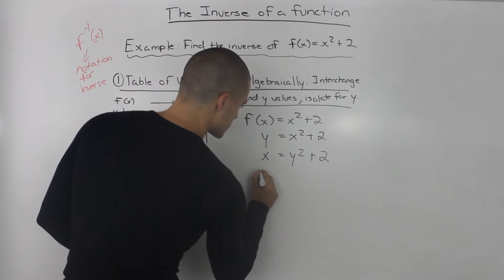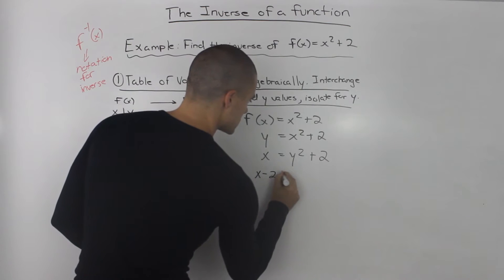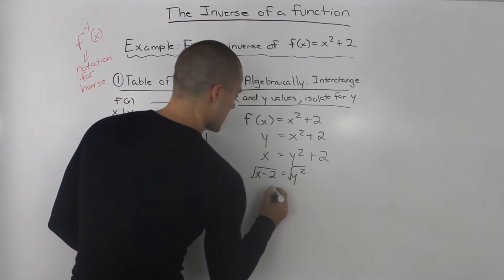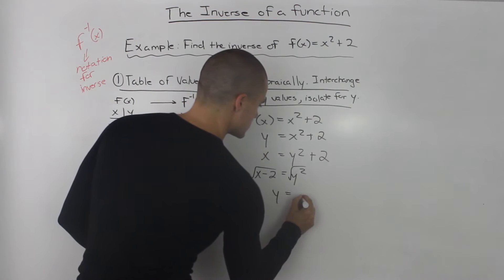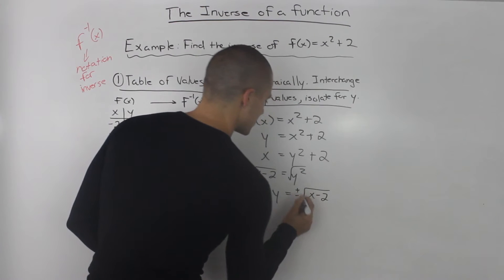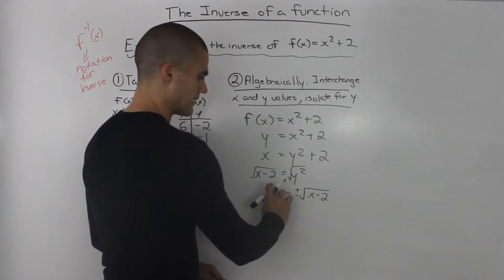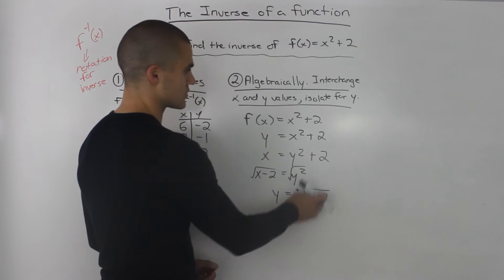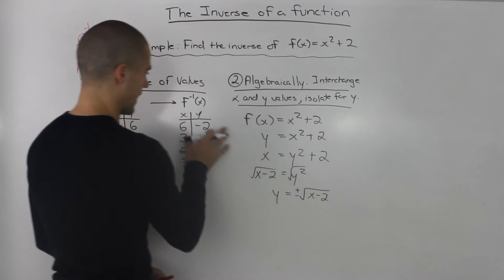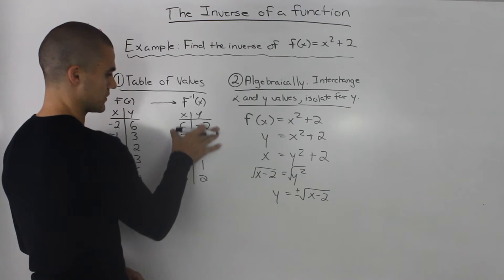So the y we would change into an x and the x we would change into a y, and then we isolate for y. So let's bring the 2 over, so we'd have x - 2 = y². And then square rooting both sides we'd have y = ±√(x - 2). Remember the square root can be plus or minus. And this here represents the inverse of this function.